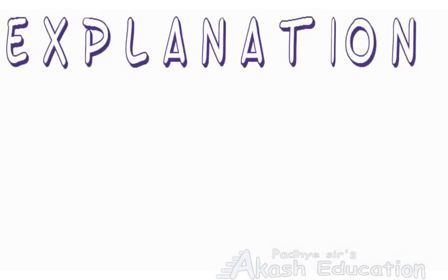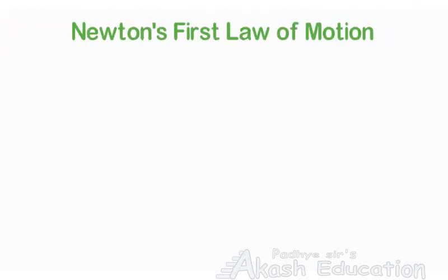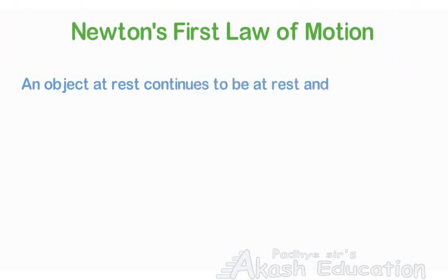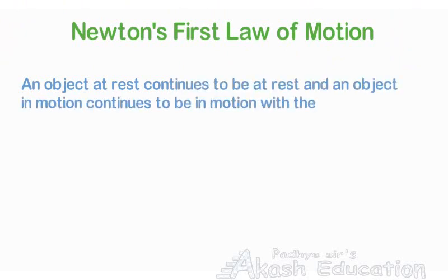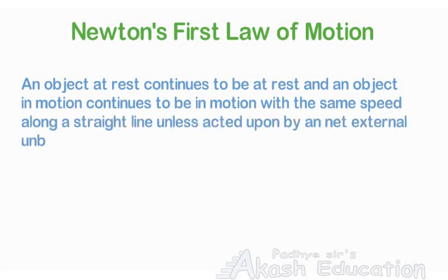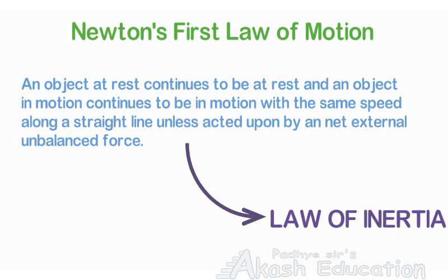Let us consider Newton's first law of motion. It states that an object at rest continues to be at rest, and an object in motion continues to be in motion with the same speed along a straight line unless it is acted upon by an external unbalanced force. Sometimes this is also known as the law of inertia. Let's focus on the part which says an object in motion should remain in the same motion unless it is acted upon by some external force.